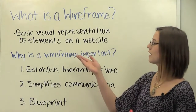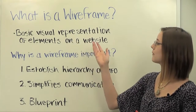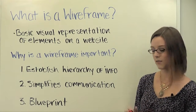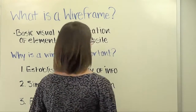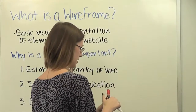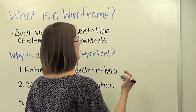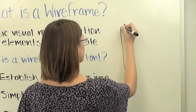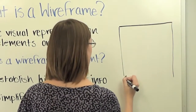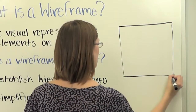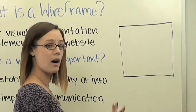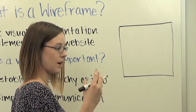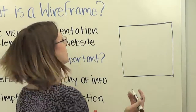To sum it up, it's a visual representation of elements on a website. To give you an idea of what that might look like — without any colors, shading, fonts, or other design elements — you basically have your web page with the most important pieces outlined in boxes and shapes, using only grayscale to keep it really simple.